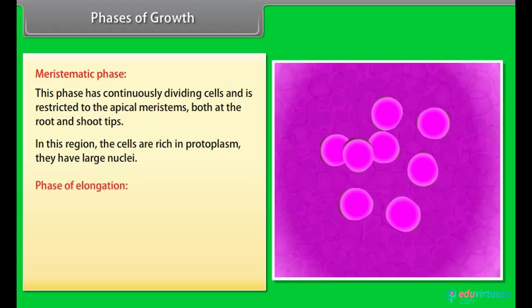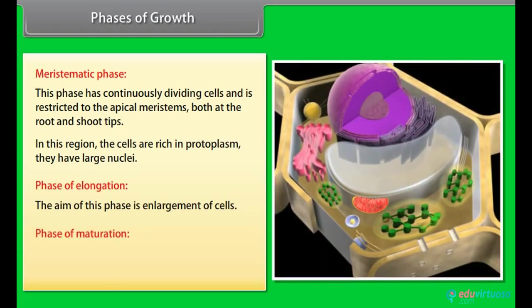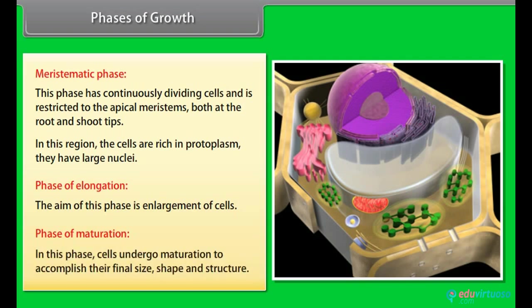Phase of elongation. The aim of this phase is enlargement of cells. Phase of maturation. In this phase, cells undergo maturation to accomplish their final size, shape and structure.